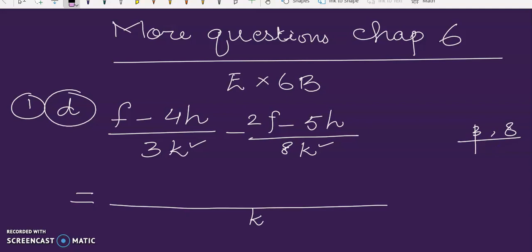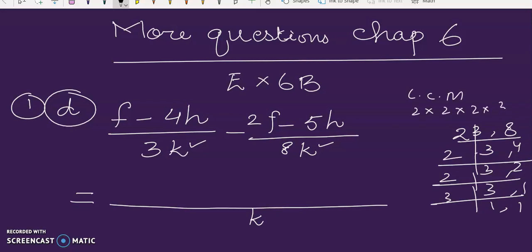Let me start from 2, the prime factorization. 2, 4s are 8, then again 2, 2, 4s are 2, 2, 1s are 1, and 3, 1s are 1. So the LCM is 2 by 2 by 2 by 3, so we get 24.